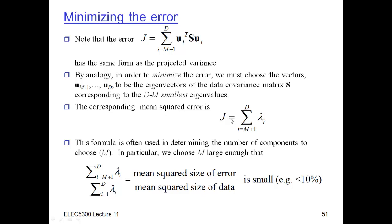And so this formula is often used to determine the number of coefficients to choose. Because what you want to do is you want to make this error small, and the question is small relative to what? Small relative to the actual size of the data. So if you look at this ratio here, this is the mean squared size of the error divided by the mean squared size of the data. So here I sum over all D, and here I only sum over the last ones after M. And I want to make this as small as possible. So obviously the larger I make M, the smaller this becomes, because the fewer terms I sum over. And so what I can do is I can set a bound, let's say I want this to be less than 10%, and then decrease M, throwing away more and more components until this error gets too big.